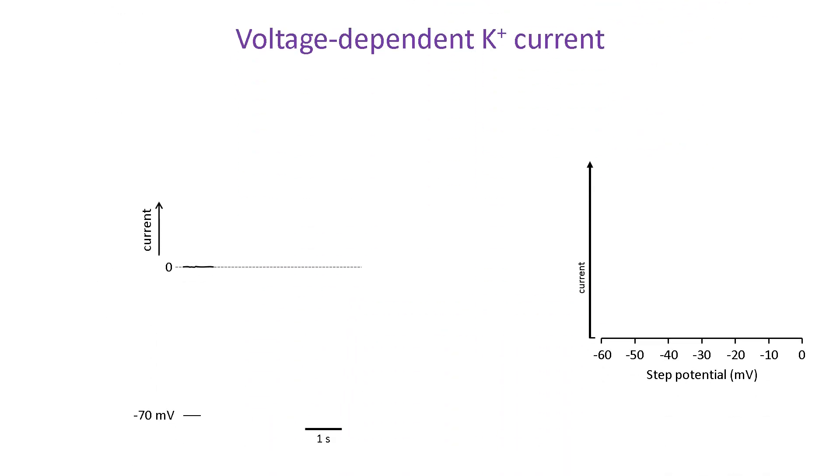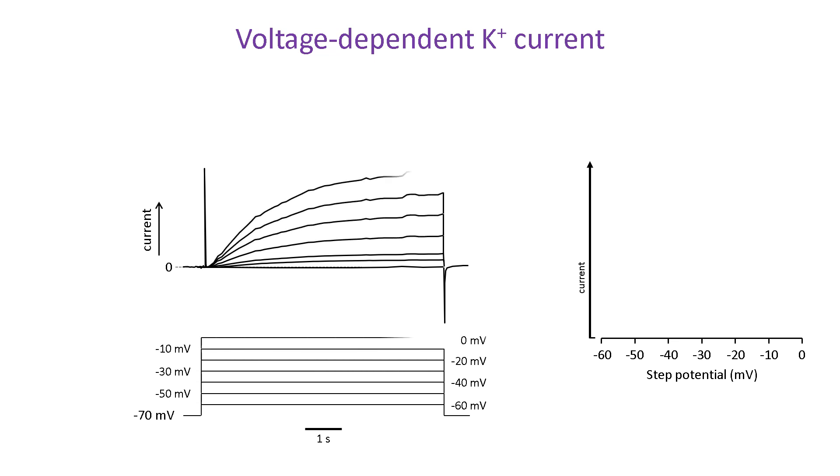The same approach is taken to record voltage-gated potassium currents. Again, there is no current at minus 70 millivolts because voltage-gated potassium channels do not open at that voltage. But, as the size of the voltage step increases, gradually increasing currents are activated. This time, they don't show inactivation within the timescale of the voltage steps. The current amplitudes are then measured and plotted as a function of the voltage at which they were activated. This reveals a typical current-voltage relationship for an outwardly rectifying potassium channel.